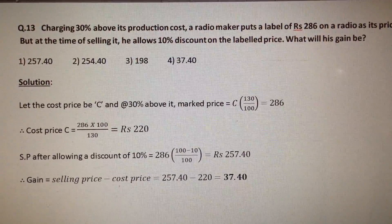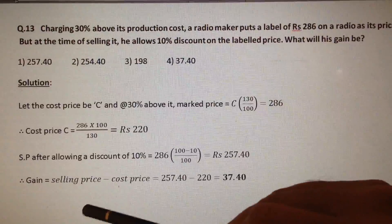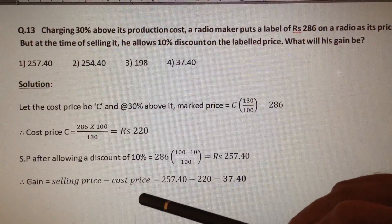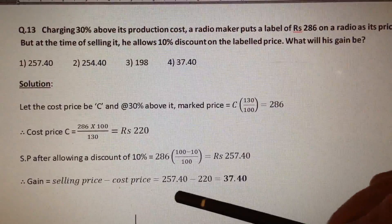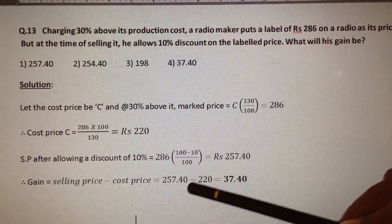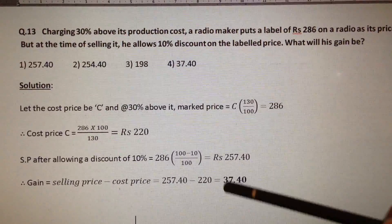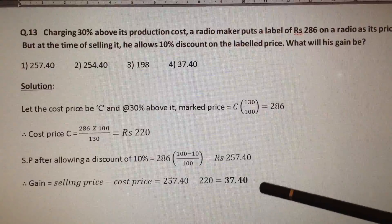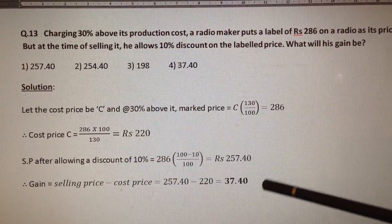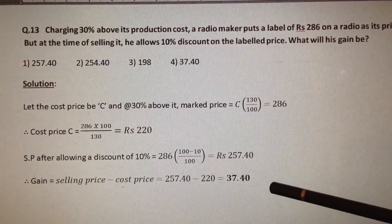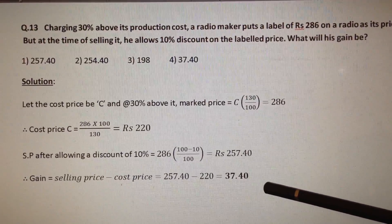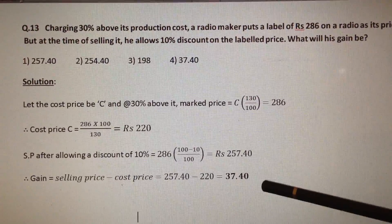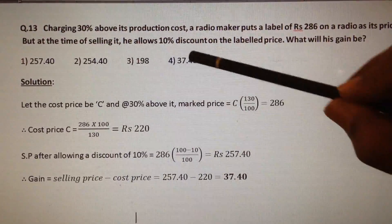Therefore, the gain is selling price minus cost price, which is equal to Rs. 257.40 minus Rs. 220, which is equal to Rs. 37.40. So our answer is option number 4.